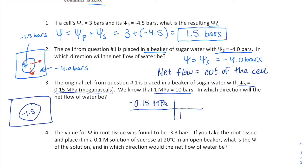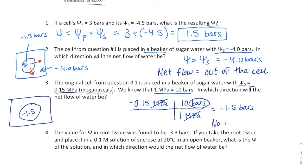I set up my conversion chart knowing that one megapascal equals 10 bars. Canceling units, I multiply negative 0.15 by 10 and divide by one, leaving me with negative 1.5 bars. Since the water potential inside the cell equals the water potential outside the cell, there is no net flow of water.